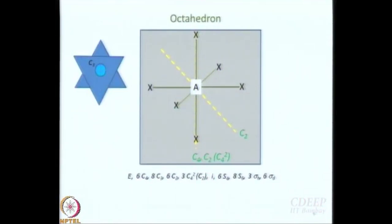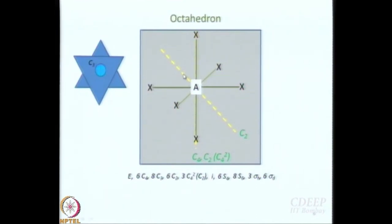Sigma D — where is sigma D? Sigma D will be along this C2. What do these sigma Ds do? They bisect the angle between two C2 axes — that is why they are called sigma Ds. Sigma D must contain the principal axis, and it bisects the angle between two C2 axes. So many symmetry operations are there. If you add them all, you get 48 — that is the order. Order means the total number of symmetry operations. This group is called Oh.